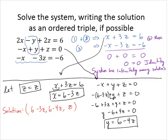Now we could find a specific solution. What if we let z equal, say, 2? If z is 2, then 6 minus 3 times 2 is 0, and 6 minus 4 times 2 is negative 2. So (0, -2, 2) is one solution of this system, but it is not the only solution.